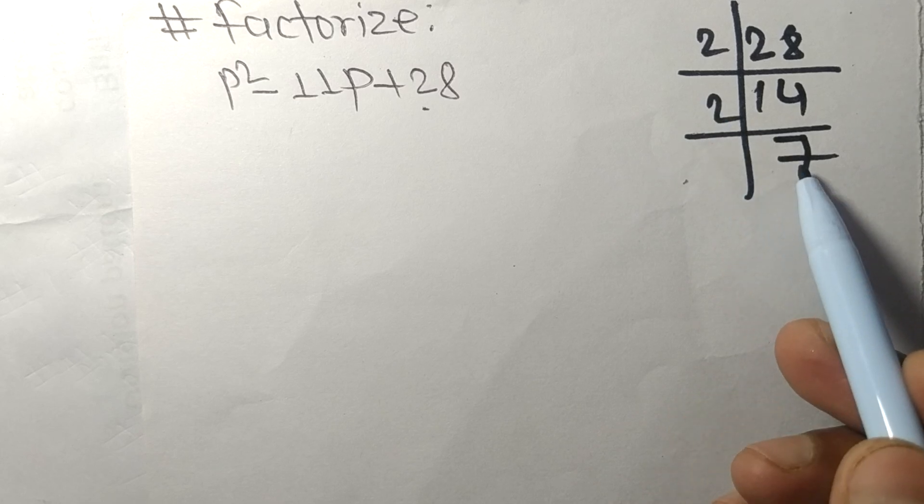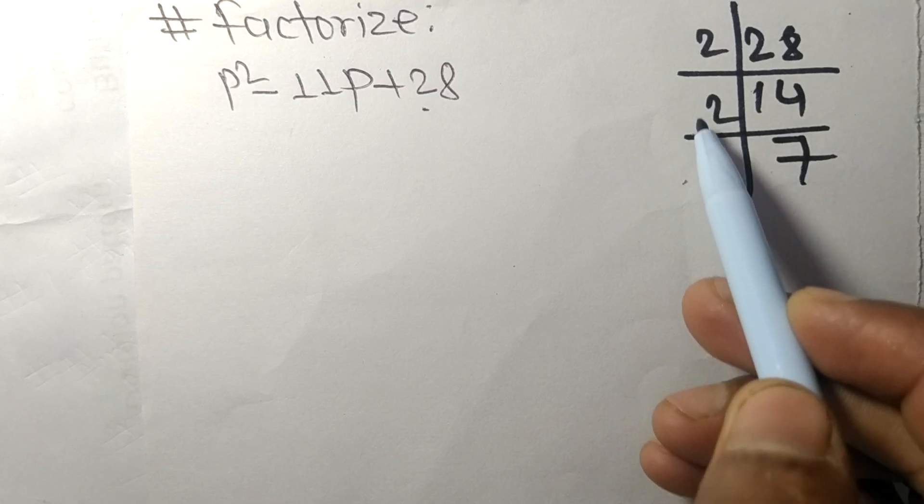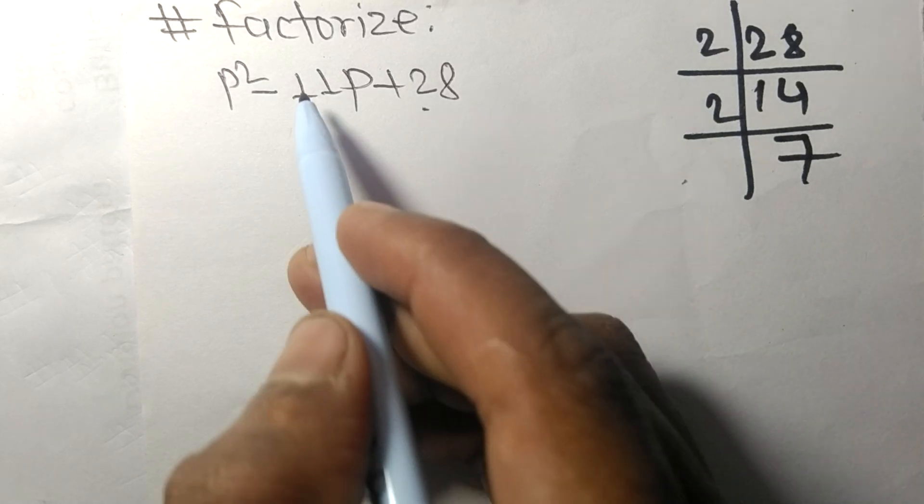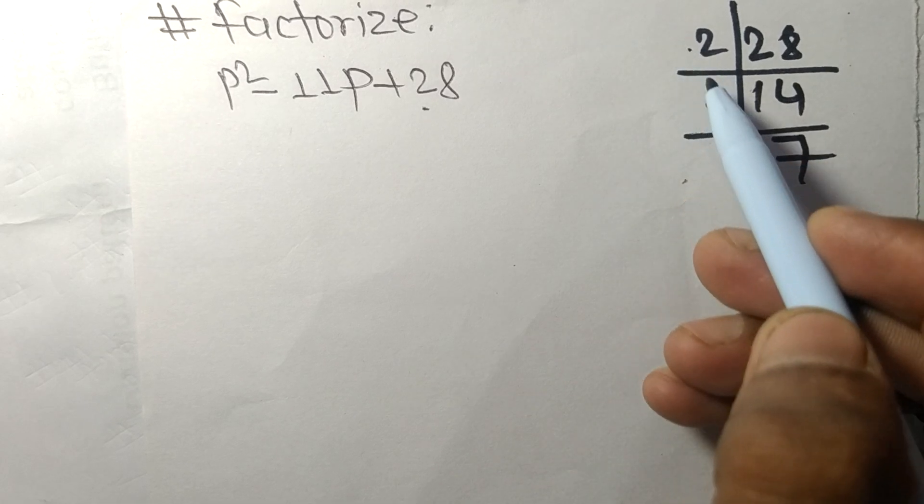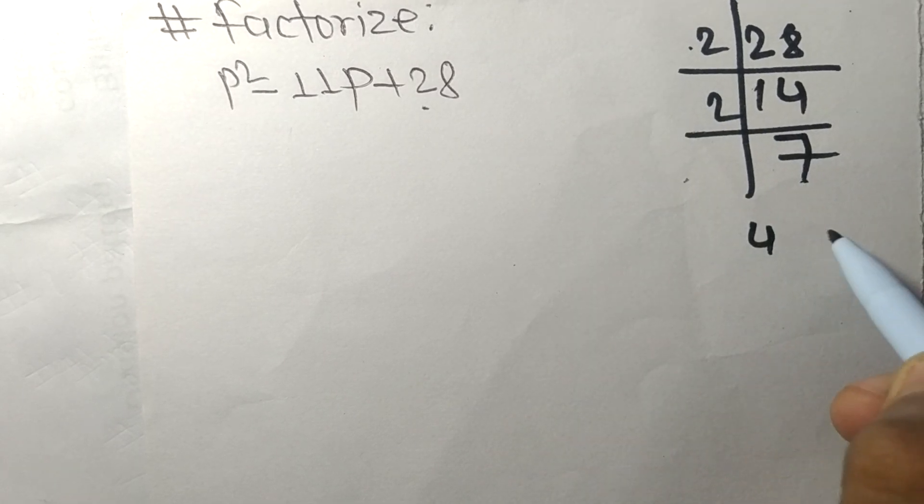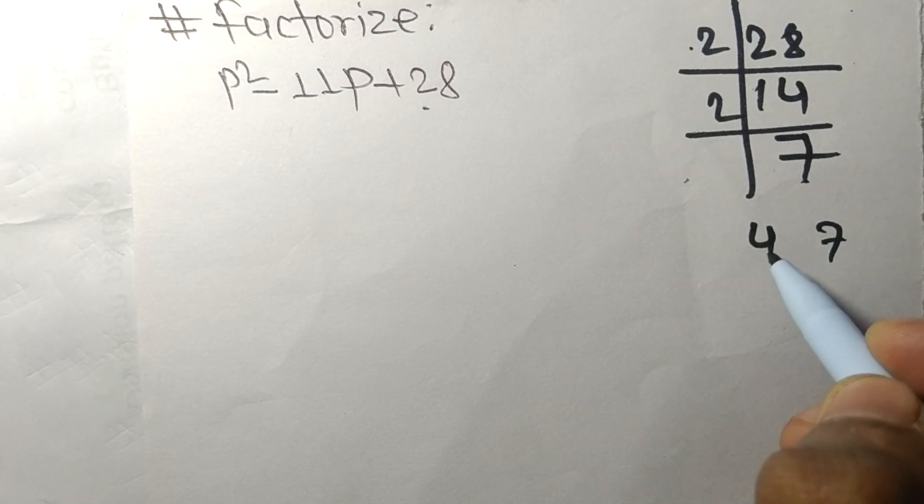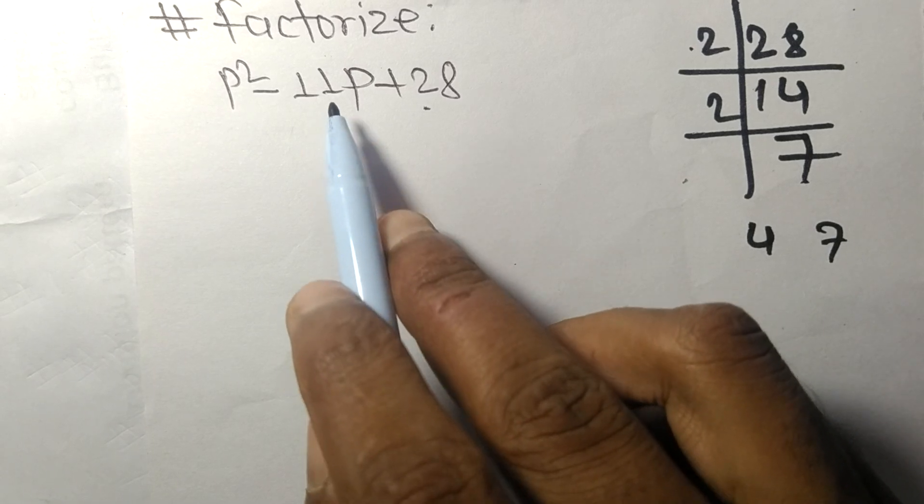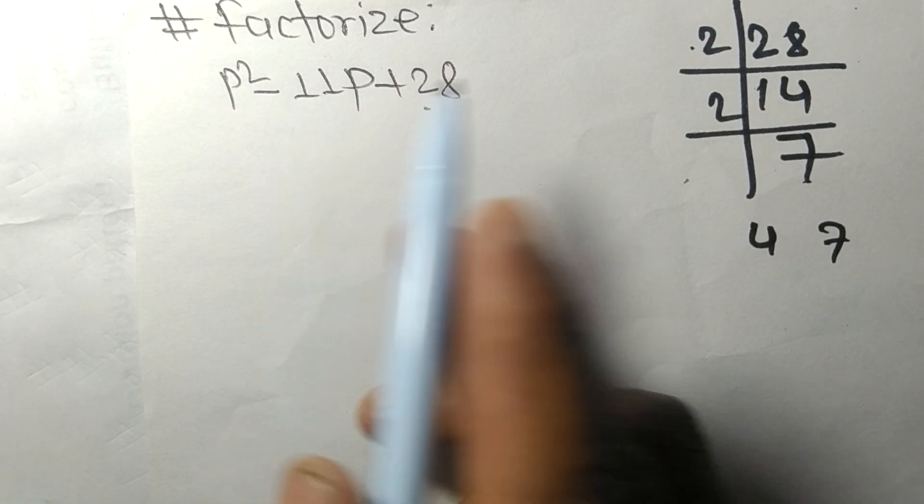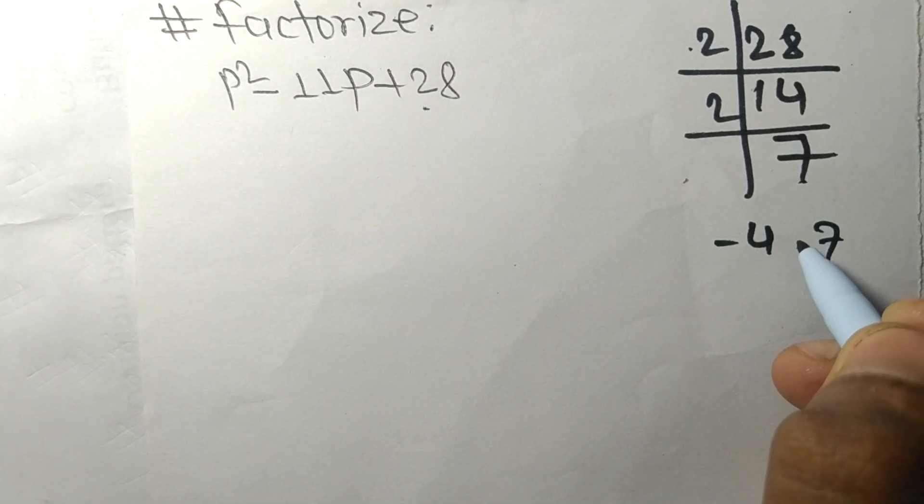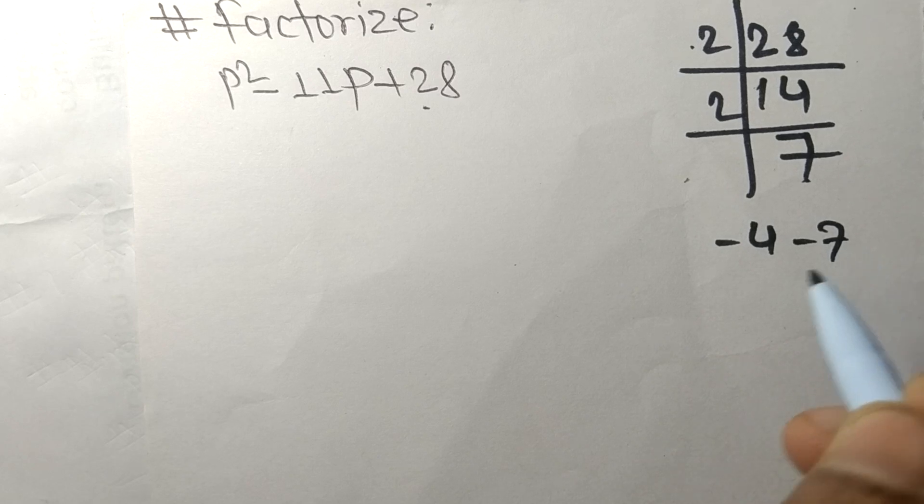By multiplying among these numbers we need 11. So 2 times 2 equals 4, and this 7, so 4 plus 7 equals 11. But here is minus, so minus 4 and minus 7, which means minus 11.